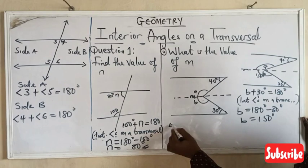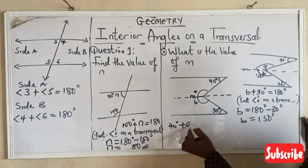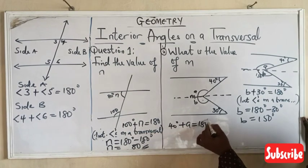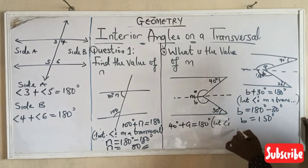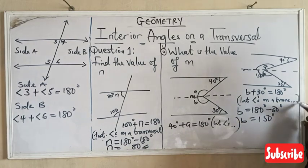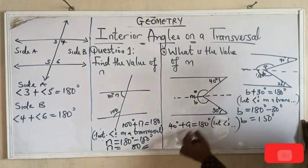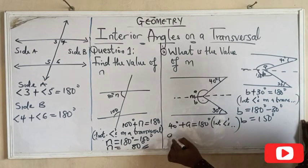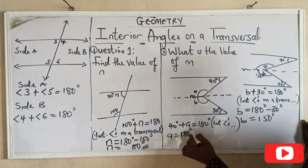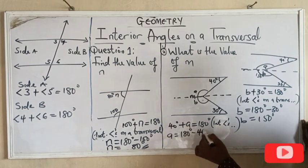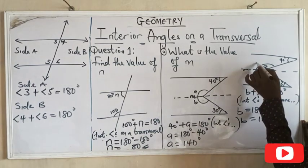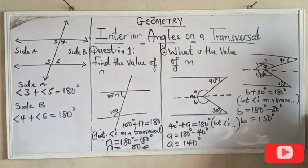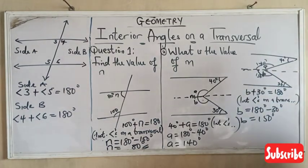Now let's quickly look at the value of this a. For this a, I can say that 40 degrees plus a equals 180 degrees, using interior angles on a transversal. Then to find the value of my a, I would say a equals 180 degrees minus 40 degrees. Then my a equals 140 degrees.